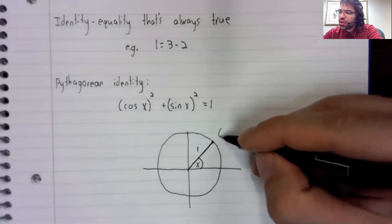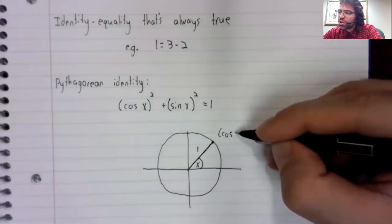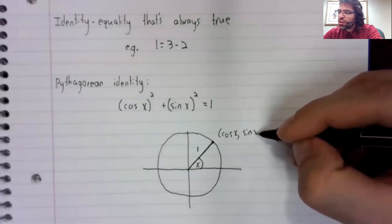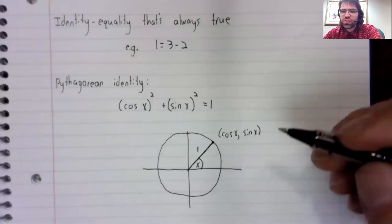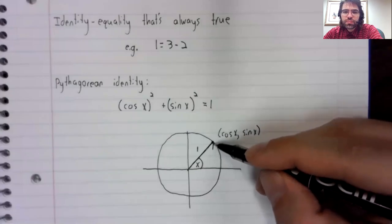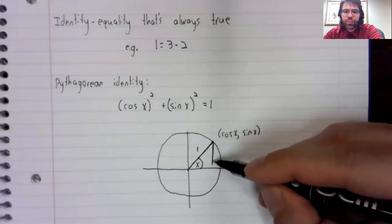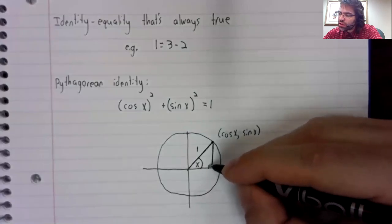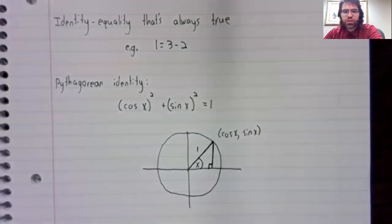And because it's the unit circle, this radius has length one. This point here is the cosine of x comma the sine of x.